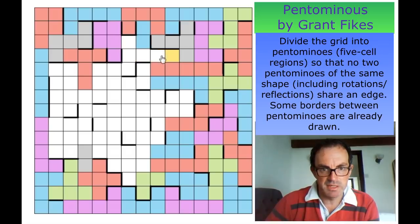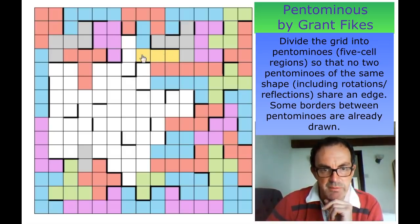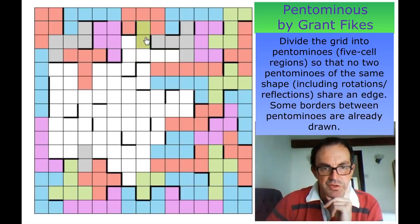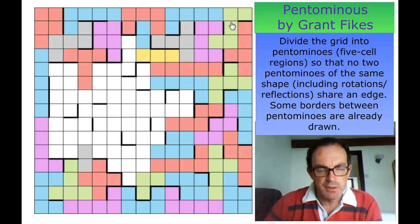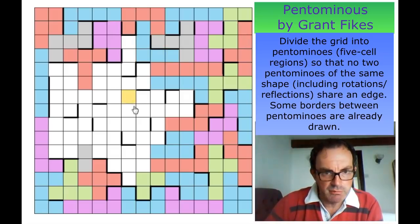These three squares now have to be the same, and they have to join with this domino — otherwise we would have an isolation of this domino's pentomino. I've said 'omino' a lot in this video, for that I apologize mildly. These three squares are the same now.